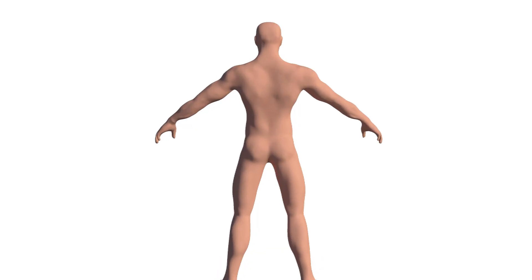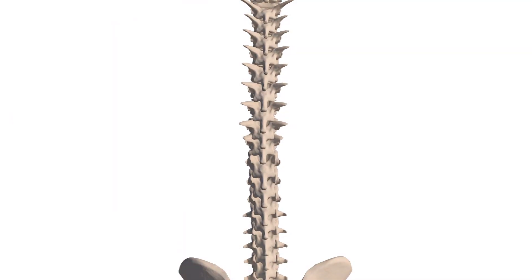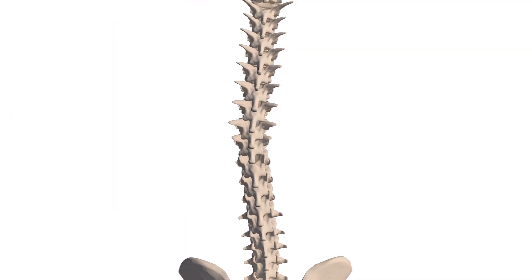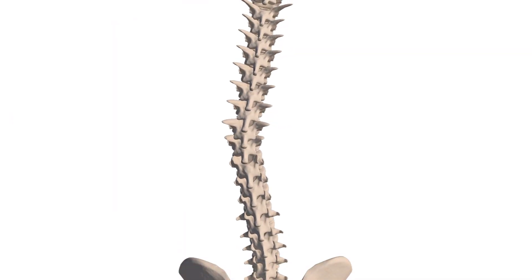A scoliosis diagnosis typically means you have an unnatural or abnormal sideways curvature of the spine, either in the lumbar, thoracic, or cervical area. This curve has a Cobb angle measurement of 10 degrees or greater with rotation, and typically the rotation is into the concavity of the scoliosis.